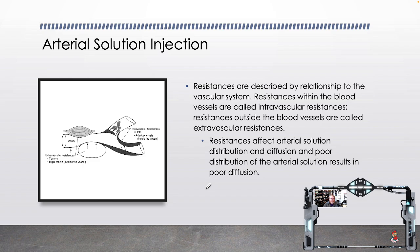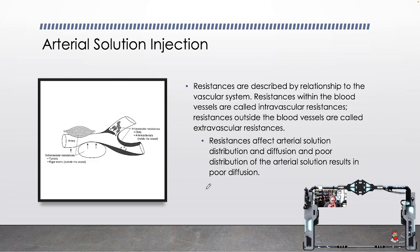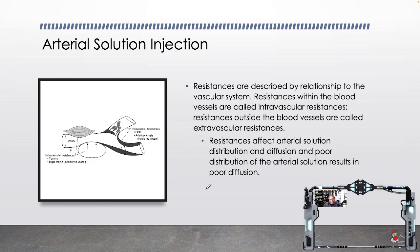Resistances are described by relationship to the vascular system. Resistances within the blood vessels are called intravascular resistances; resistances outside the blood vessels are called extravascular resistances. Resistances affect arterial solution distribution and diffusion, and poor distribution of the arterial solution will result in poor diffusion. If you have poor distribution — not getting it everywhere you need it — you're going to have a bad result. However, if you have good distribution but don't give it time to actually do the embalming and preservation of the cells, you're also going to get a poor result, which is what we'd know as shell embalming.